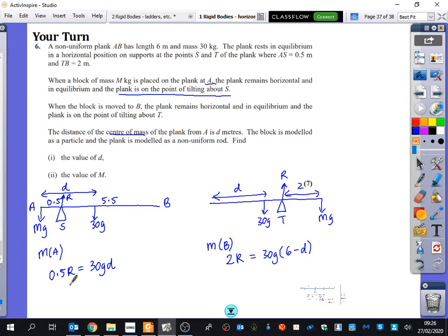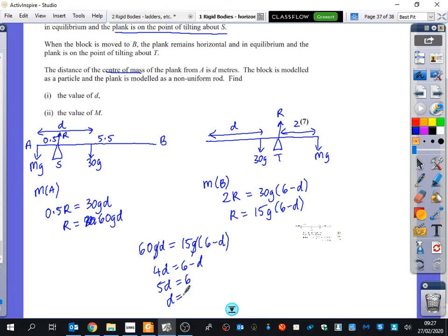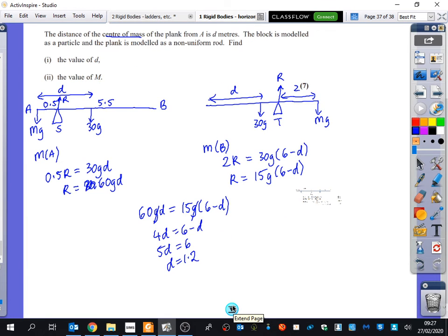Okay, so then we get... If I multiply this one, if I double this one, I'm just going to get R equals 30, 60g minus 60gD. If I half this one, I get R equals 15g times 6 minus D. And now I can put these two things together, can't I? So I can... Because they're both equal. They're both R. So I get 60gD equals 15g times 6 minus D. Cancel out G. Cancel out G. Divide both sides by 15. So I get 4D equals 6 minus D. 5D equals 6. So D equals 1.2.